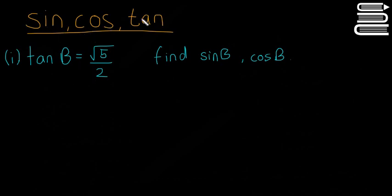We're just going to go through two quick examples using sine, cos, and tan in this video. This is a follow-on from our last video where we went through them. We can see here that tan β is equal to the square root of 5 over 2, and they're asking us to find sin β and cos β.